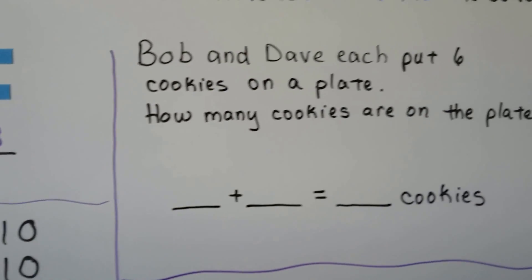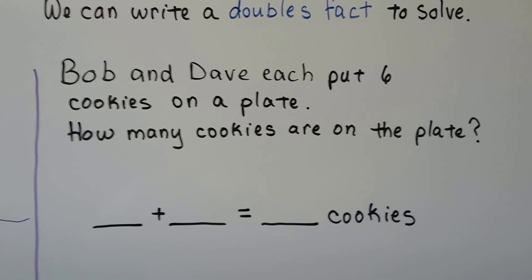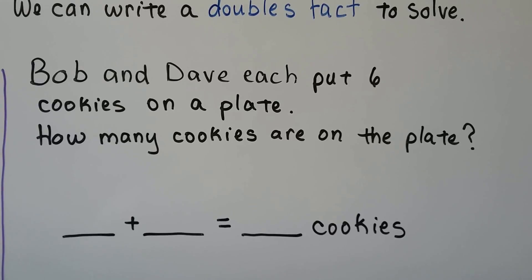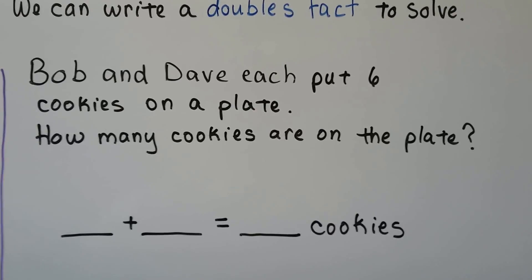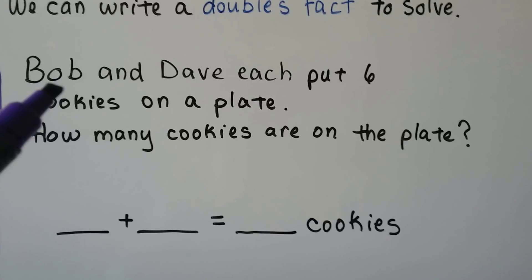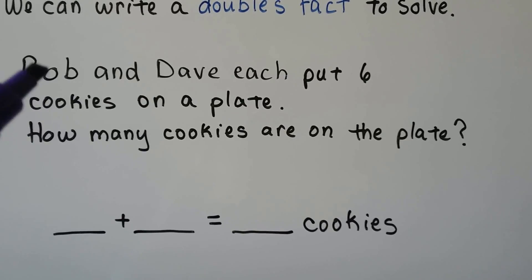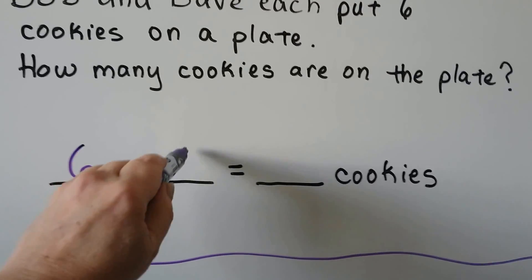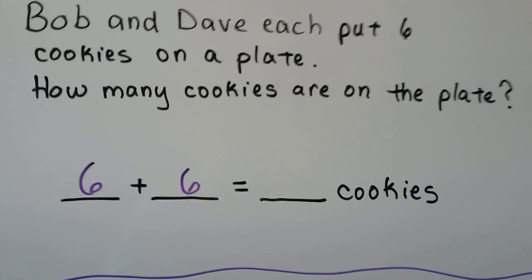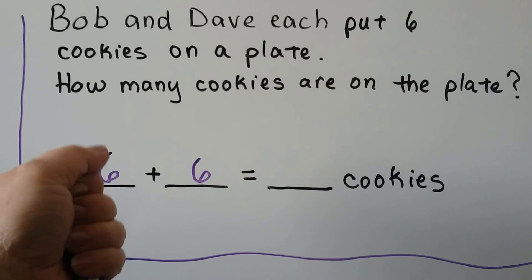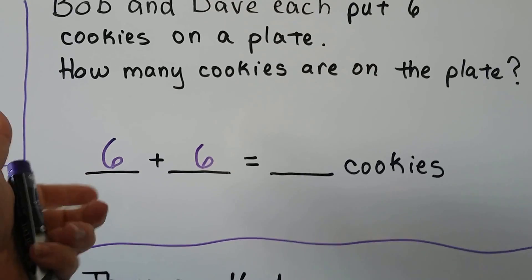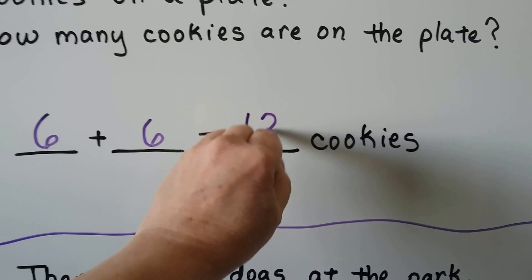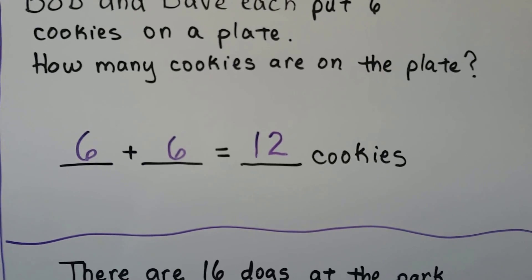We can write a doubles fact to solve this problem. Bob and Dave each put 6 cookies on a plate. How many cookies are on the plate? If Bob and Dave each put 6 cookies on a plate, that means Bob put 6 and Dave put 6. So we do 6 for Bob and 6 for Dave, then count on: 7, 8, 9, 10, 11, 12. So 6 plus 6 is equal to 12. There are 12 cookies on the plate.